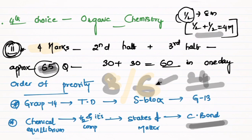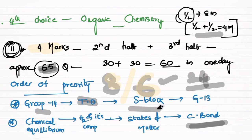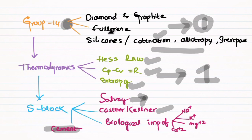In the choice section, there are six questions and we can choose from them — it's a 6 out of 5 choice. In the compulsory section, no questions are skipped. Follow the priority order: first Group 14 — you'll easily get 24 marks. Key topics: diamond, graphite differences, fullerene, silicon, catenation, allotropy — there are three questions, one compulsory.